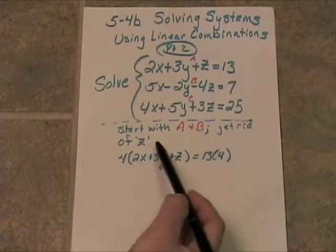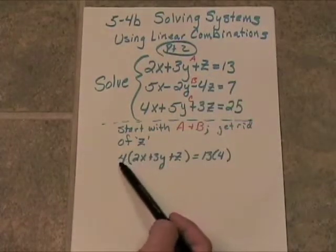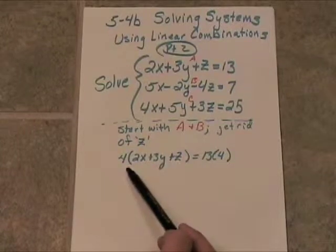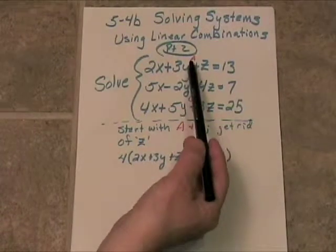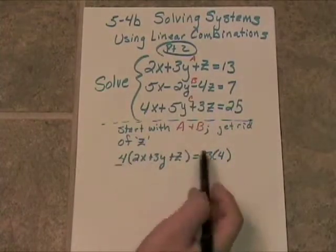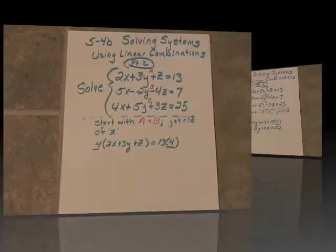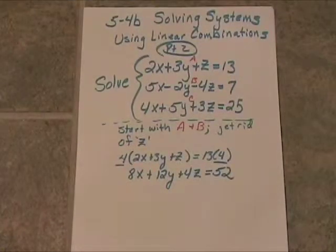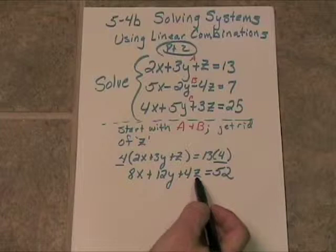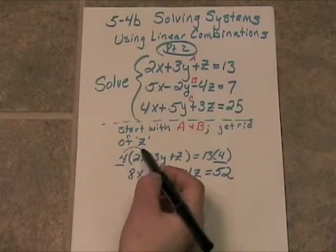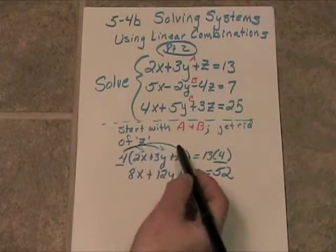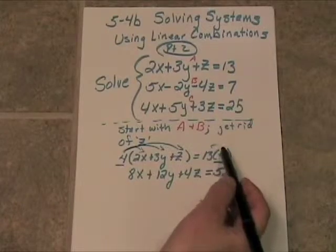To get rid of the z, I multiply both sides of Equation A by 4, and I get 8x plus 12y plus 4z equals 52. That was just straight distributive property and then multiplication right here.